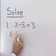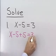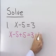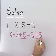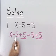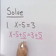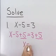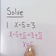x minus 5 plus 5 is equal to 3 plus 5. That's the addition property of equality — I've added 5 to both sides of that equation. Now, x plus negative 5 plus 5 is equal to x plus 0, which is just x. And on the right side, I have 3 plus 5, which is 8.